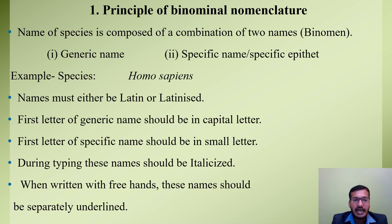During typing, these names should be italicized, and when written by hand, these names should be separately underlined. For example, if we write Homo sapiens by hand, we should underline Homo and sapiens separately.